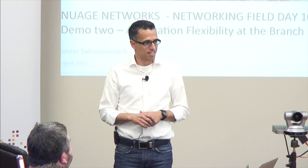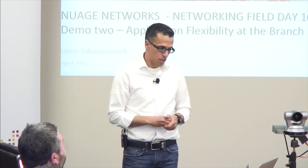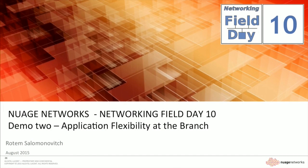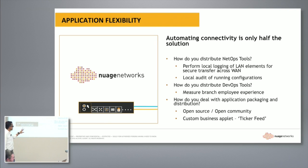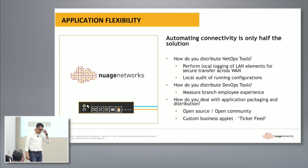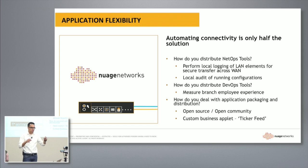Hello, my name is Rotem Salominovich, I head product management at VNS. We're moving on to our second demo today about application visibility at the branch. We talked a lot about connectivity, but connectivity is really transport. We want to automate that, but also enable applications. Users don't use the network per se — they use it to transport their communications, but what they actually consume are applications.